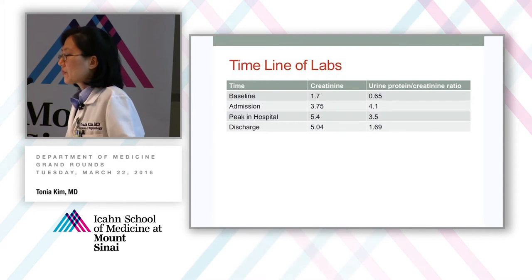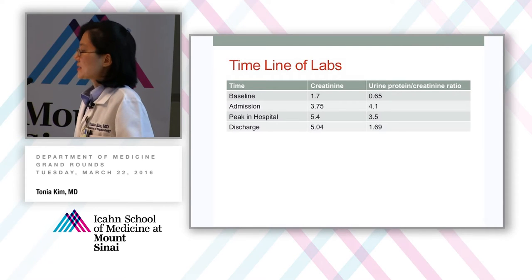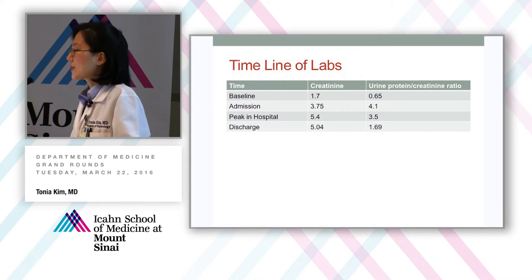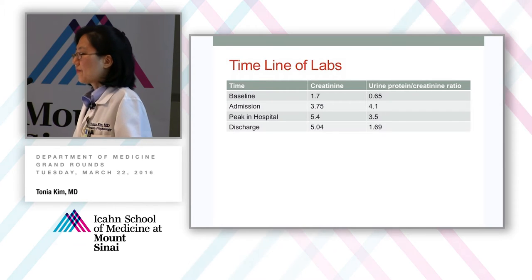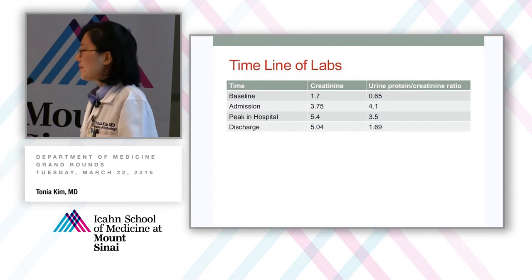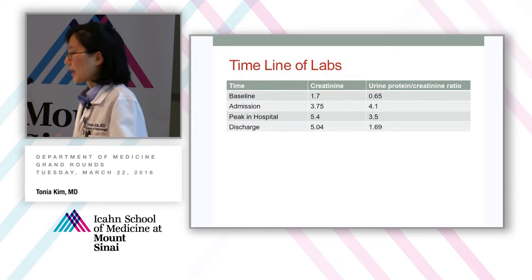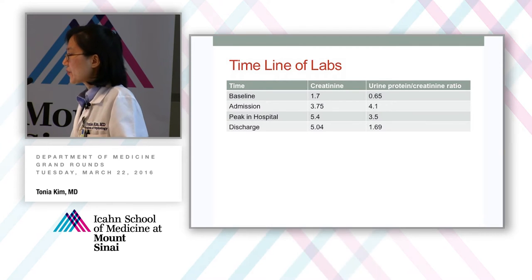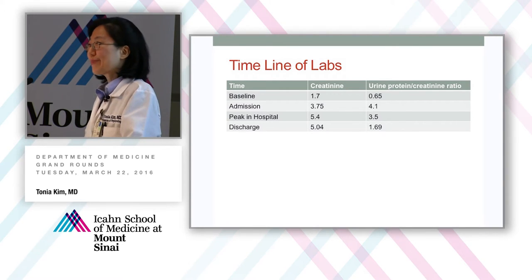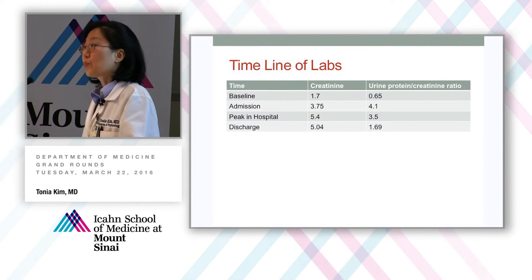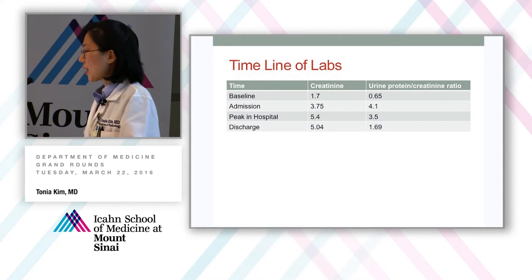For a timeline of her labs: her baseline creatinine was 1.7 and increased to 3.75 during admission. Her protein-creatinine ratio went from normal to nephrotic range. Her creatinine peaked at 5.4 during hospitalization — partly from the diuretics and partly from disease progression. Her proteinuria started to improve. At discharge, creatinine improved to 5.04 and protein-to-creatinine ratio came down to 1.69 — still elevated from baseline but much improved from the nephrotic range of 4.1.